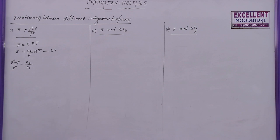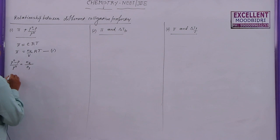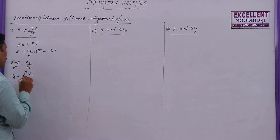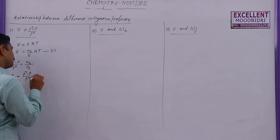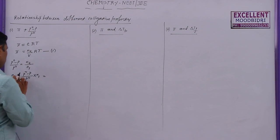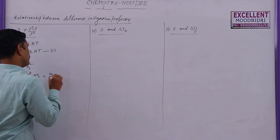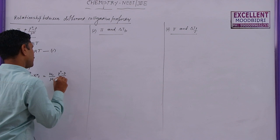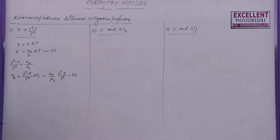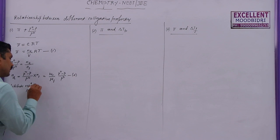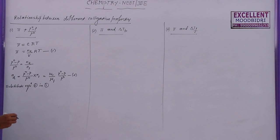Now we want to find the value of n₂. From the RLVP formula, n₂ is equal to (P₀ − P)/P₀ × n₁. And n₁ = w₁/M₁, so n₂ = (w₁/M₁) × (P₀ − P)/P₀. This is taken as equation 2. Now substitute equation 2 into equation 1.